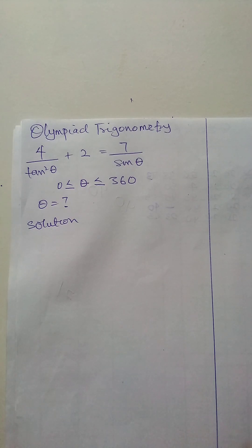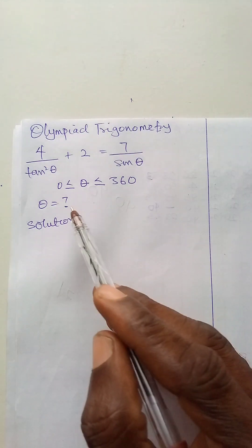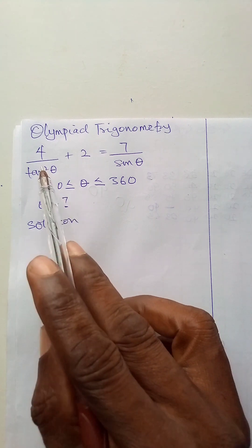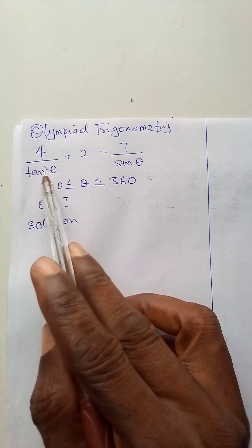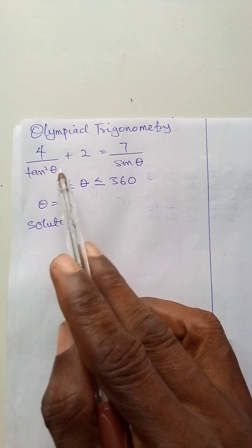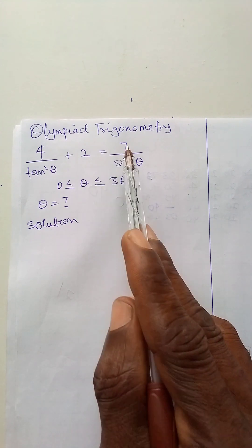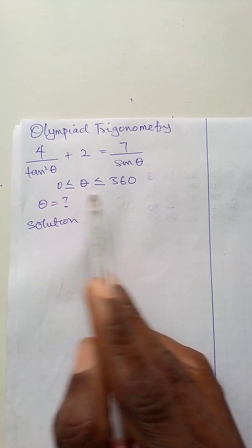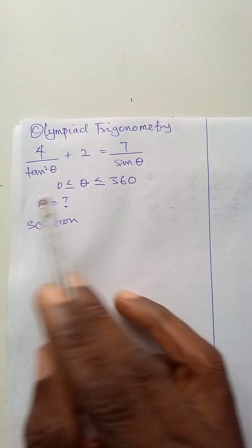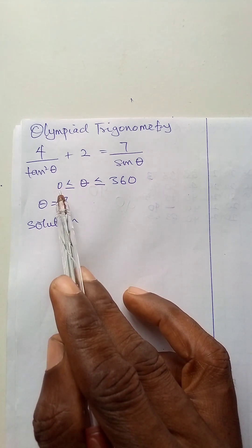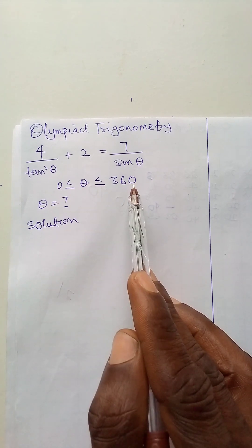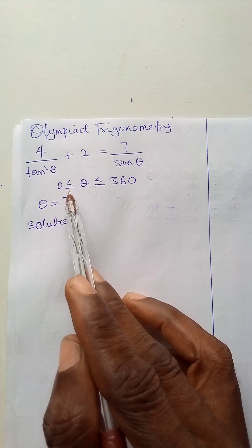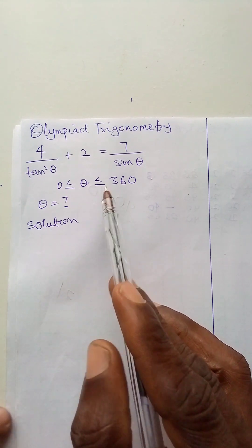In today's video, we are required to find the value of theta given that 4 over tan squared theta plus 2 is equal to 7 over sine theta. The range of values of theta is given as from 0 to 360, so theta is greater than 0 and less than 360.